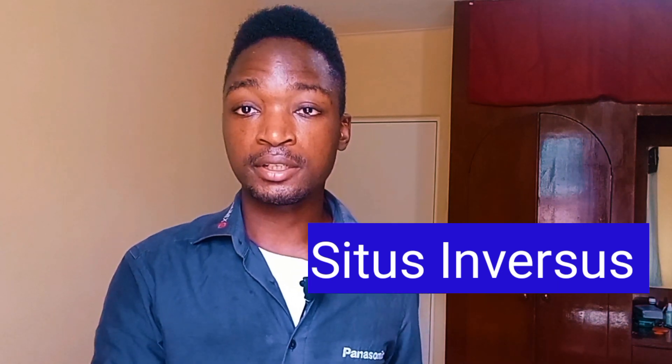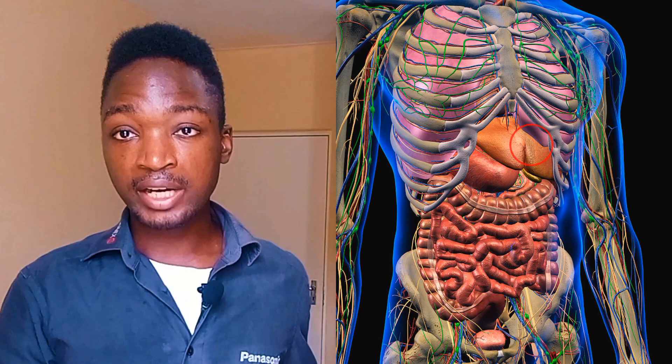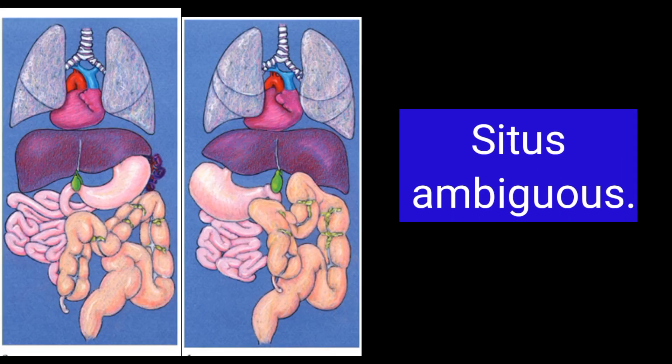In some people, these organs are mirrored or reversed to the opposite side from their normal position. We call this situs inversus. Organs normally on the left are found on the right, and vice versa — for example, the liver, normally on the right, is found on the left. Importantly, this doesn't cause problems; the organs will work normally, just as they would in a typical person.